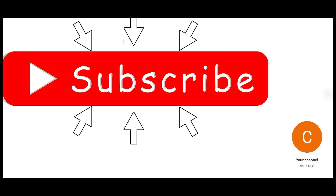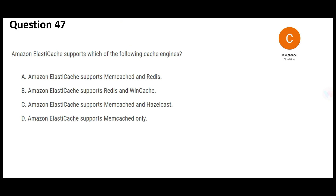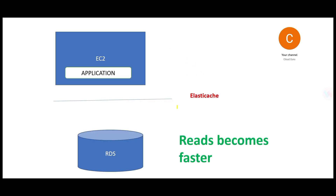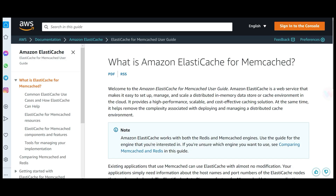Please subscribe and hit the like button if you like my videos. There is a Thanks icon below the video if you want to make a donation — there is no obligation. Now let's look at this question: which cache engines are supported by ElastiCache? In Part 15 we looked at two engines: Redis and Memcached. ElastiCache is plugged in between the database and the application so that reads become faster. For an in-memory data store, we use Memcached.